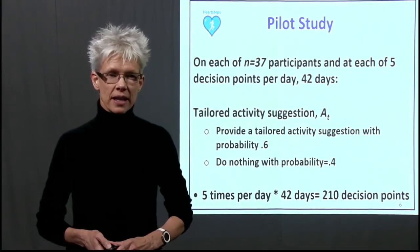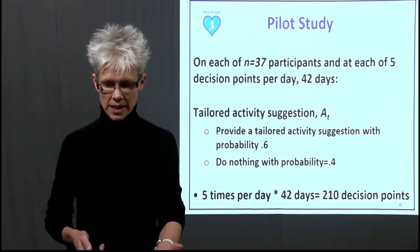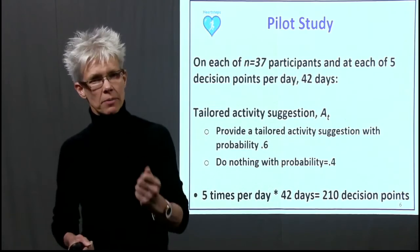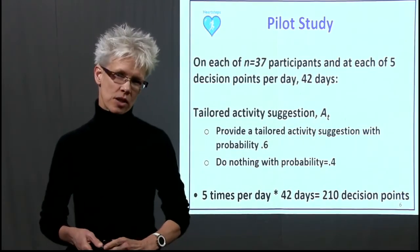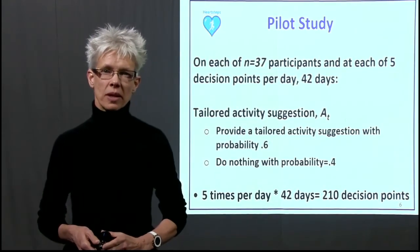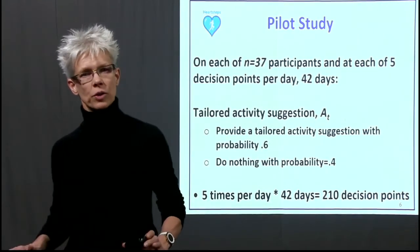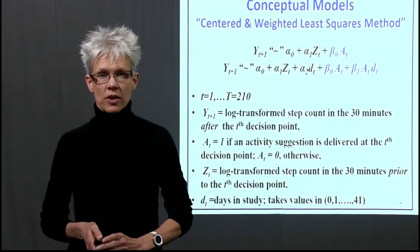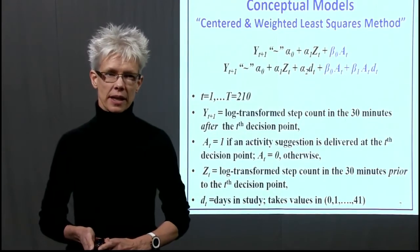Every day, we had to decide how to randomize whether or not one would get a message at each of those five decision points. We wanted an average of three activity messages per day across five opportunities, so we chose a probability of 0.6 to provide a message and 0.4 to do nothing. The study had 37 participants, and then we went to analyze the data.